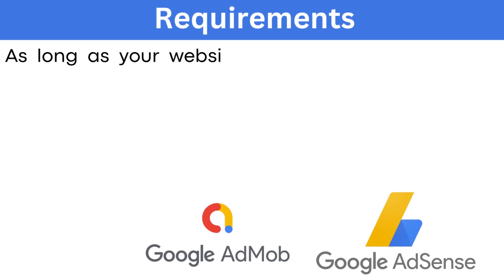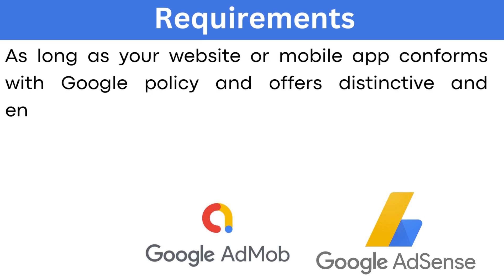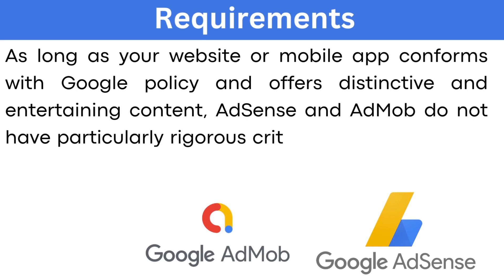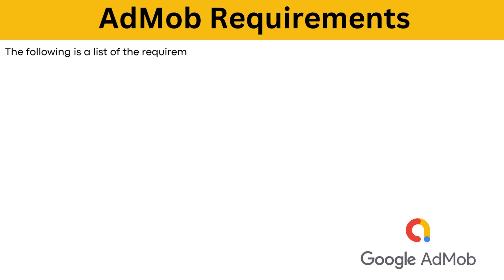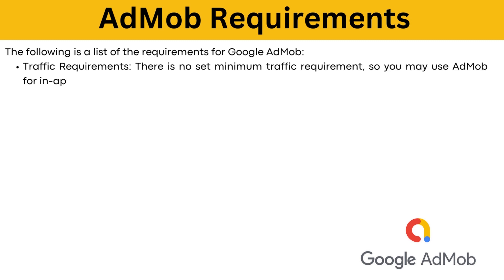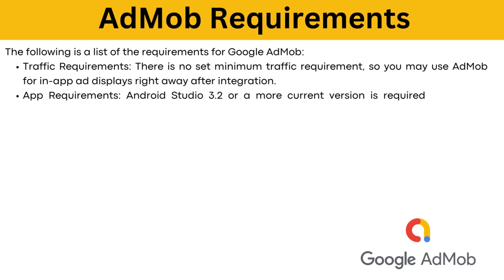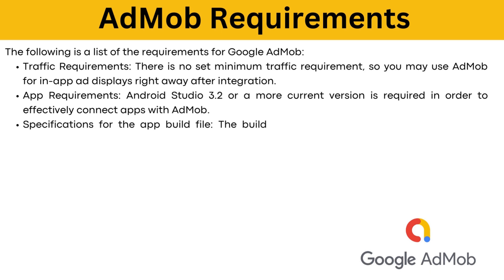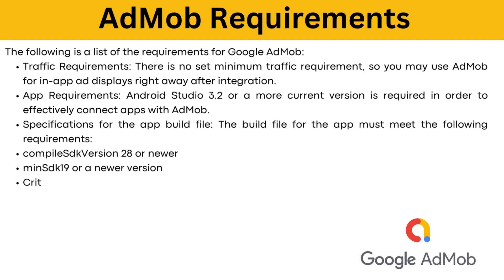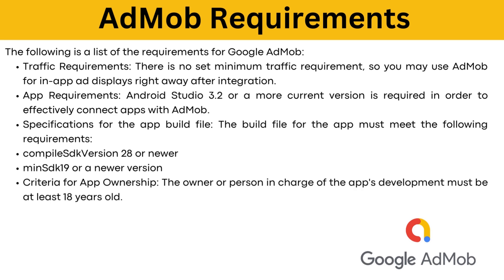Requirements: As long as your website or mobile app conforms with Google Policy and offers distinctive and entertaining content, AdSense and AdMob do not have particularly rigorous criteria when it comes to traffic. AdMob requirements include: no minimum set traffic requirement, so you may use AdMob for in-app ad displays right after integration; Android Studio 3.2 or a more current version is required to connect apps with AdMob; the build file must meet compile SDK version 28 or newer and admin SDK 19 or a newer version; and the owner or person in charge of the app's development must be at least 18 years old.